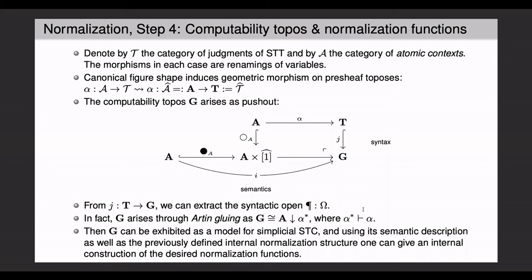One can then show, analogously to the setup by Sterling and Angiuli, that this computability topos is a model for the correct version of synthetic Tate computability. And then, using these internal definitions of the normalization structure and the stabilized Tate computability that we've seen before, one can give an internal version of the NBE functions for types and terms.